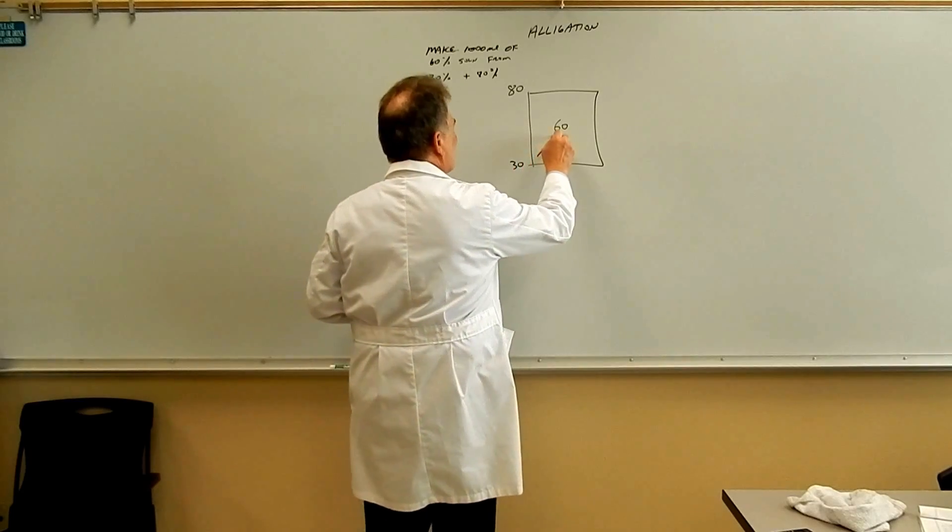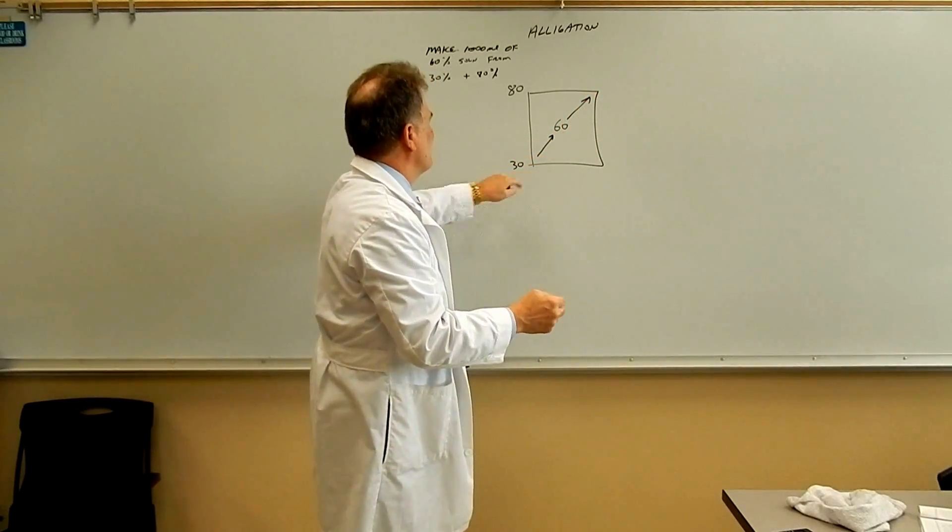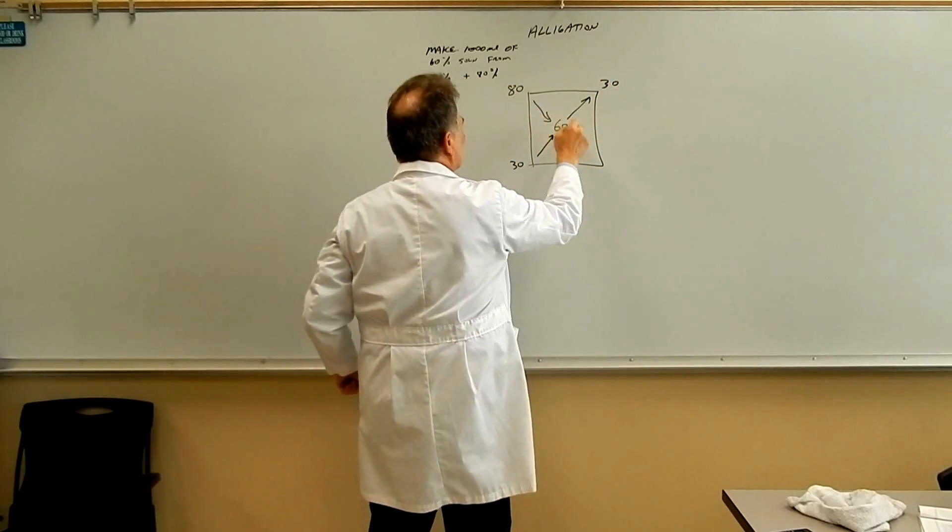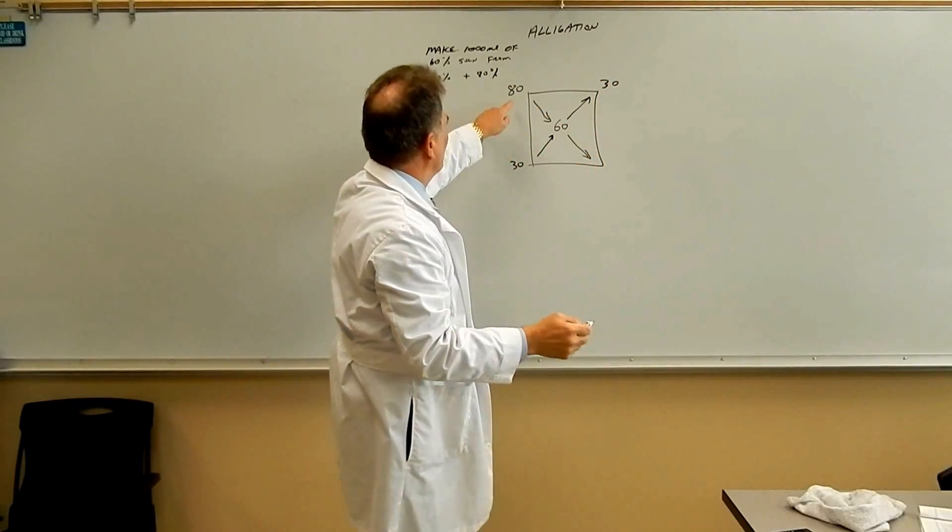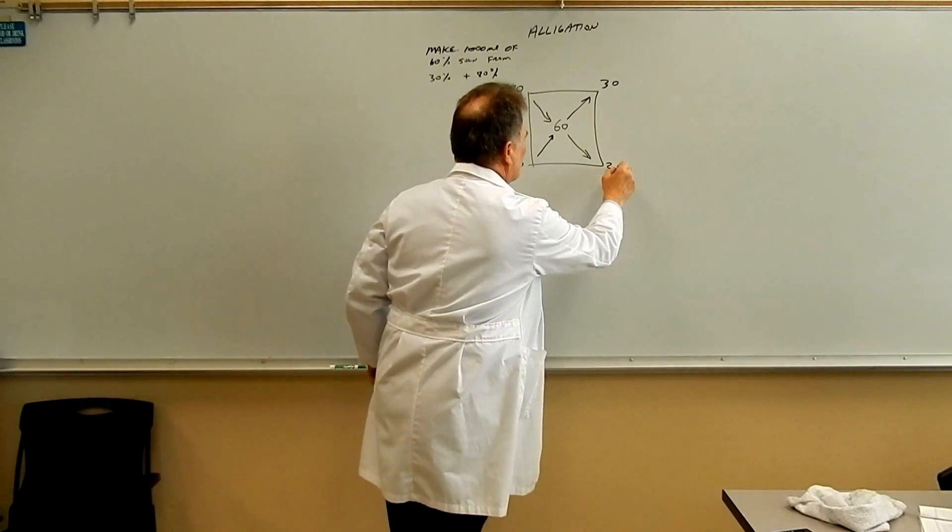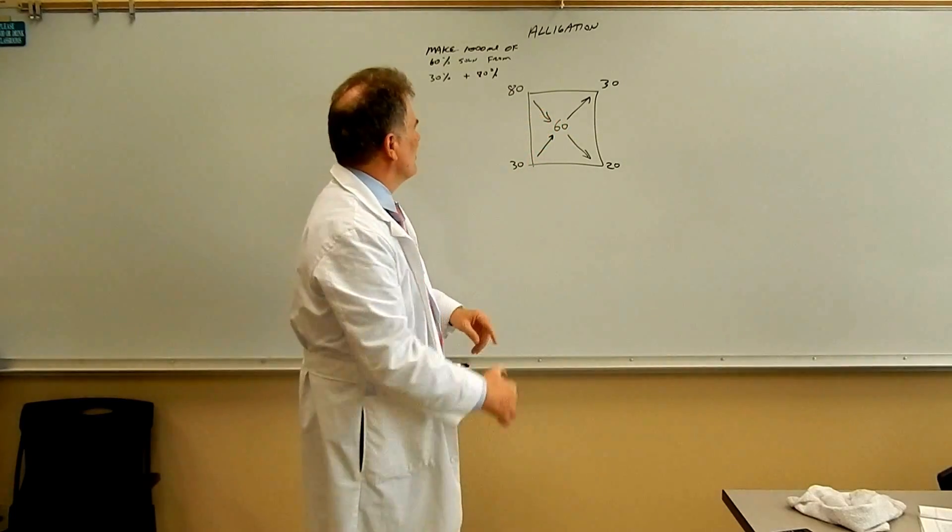Now you go this way diagonally and we take the difference between 60 and 30 and run it up here. Then we go down this way take the difference between 60 and 80 again and it's gonna be 20. So it's always a positive number, the positive difference.